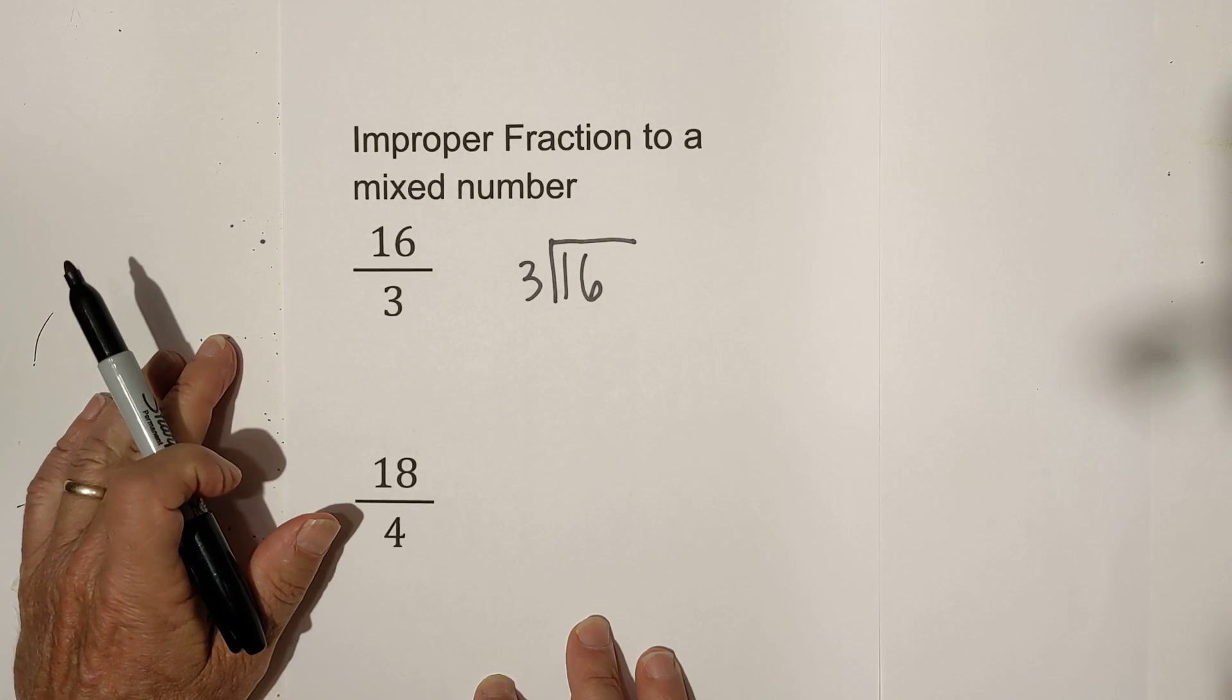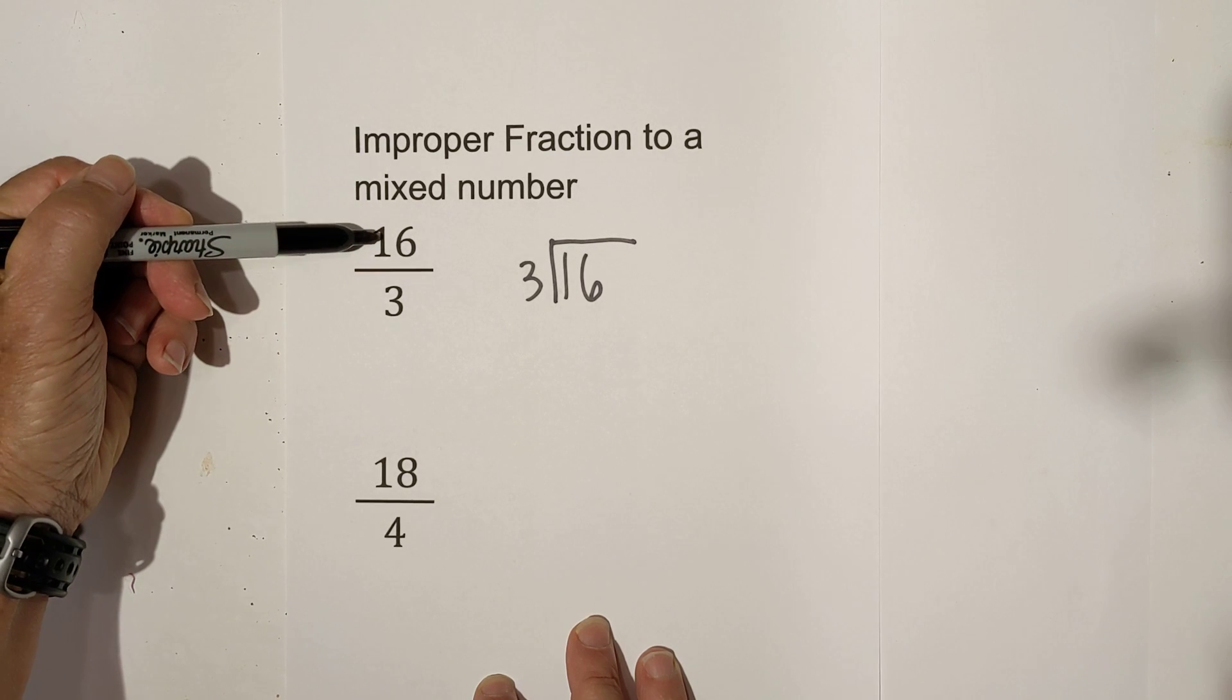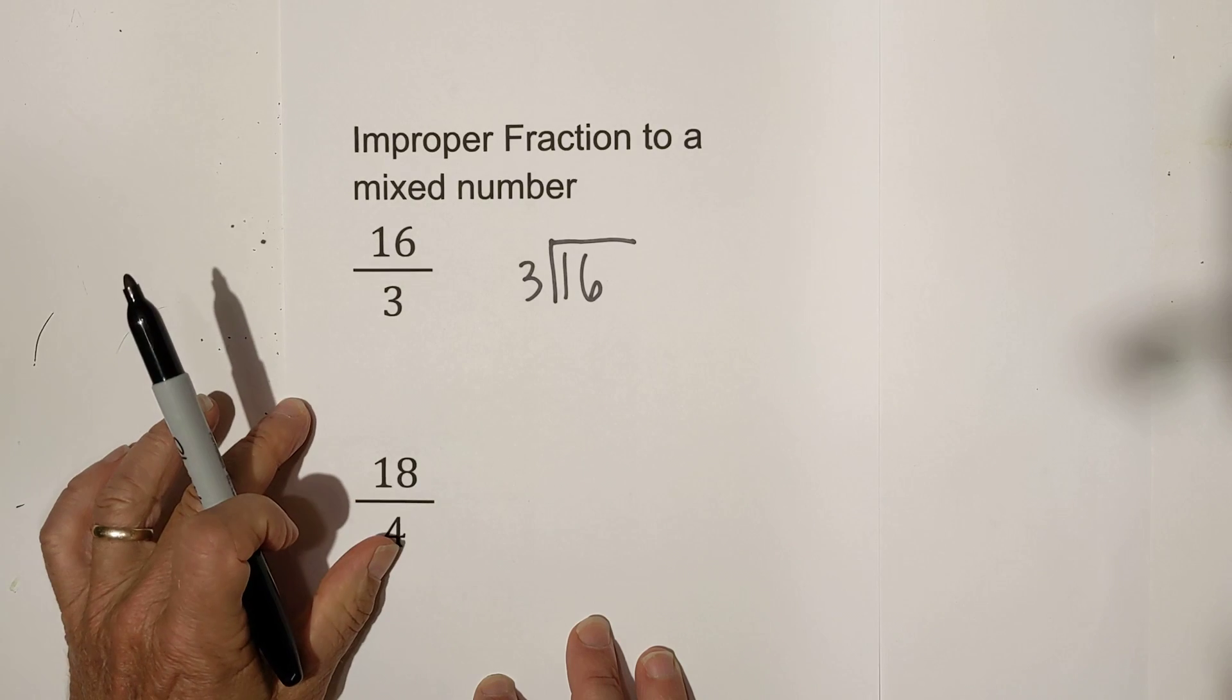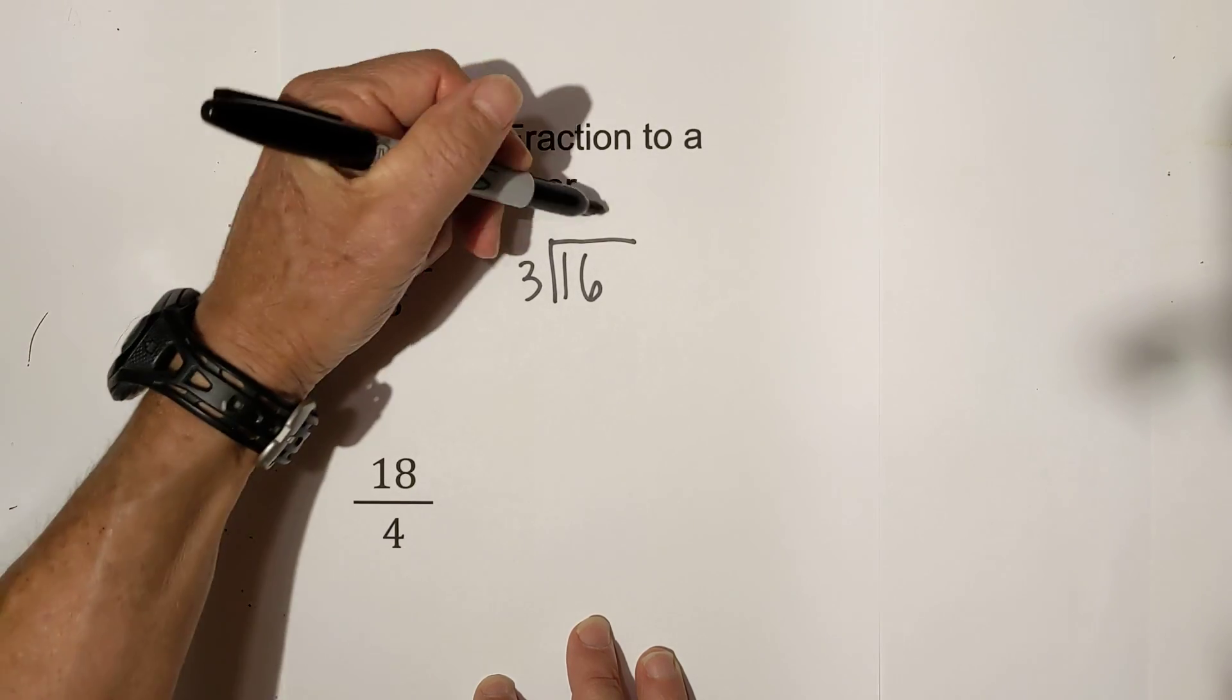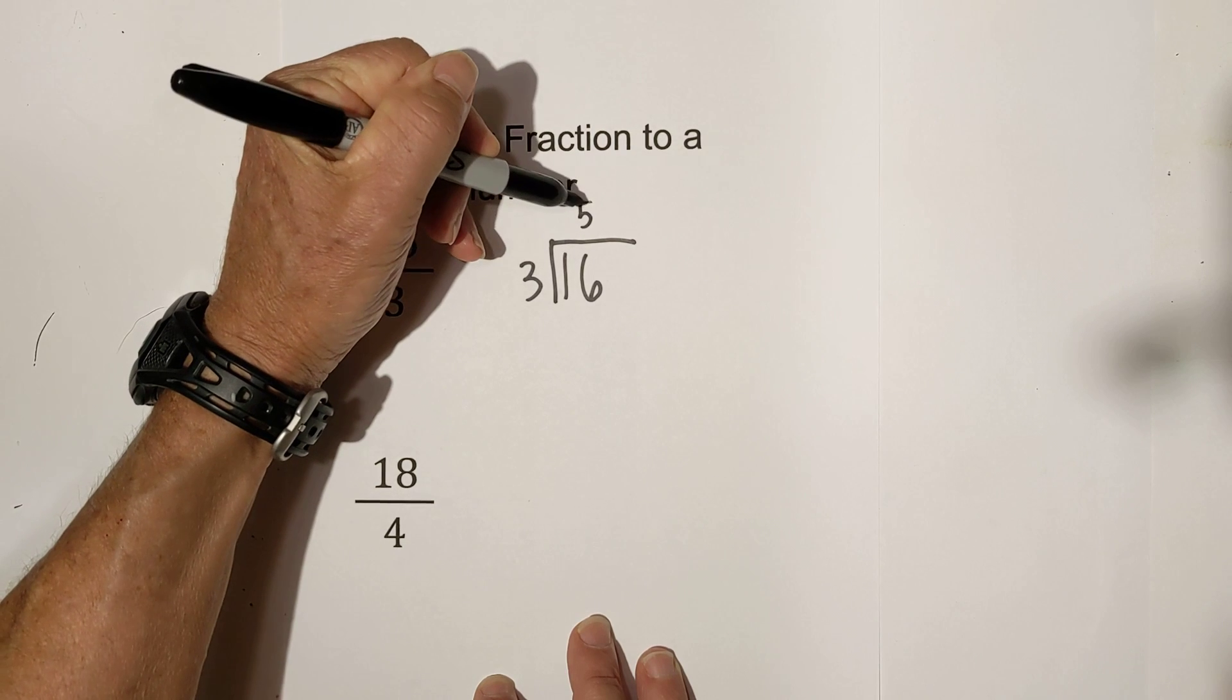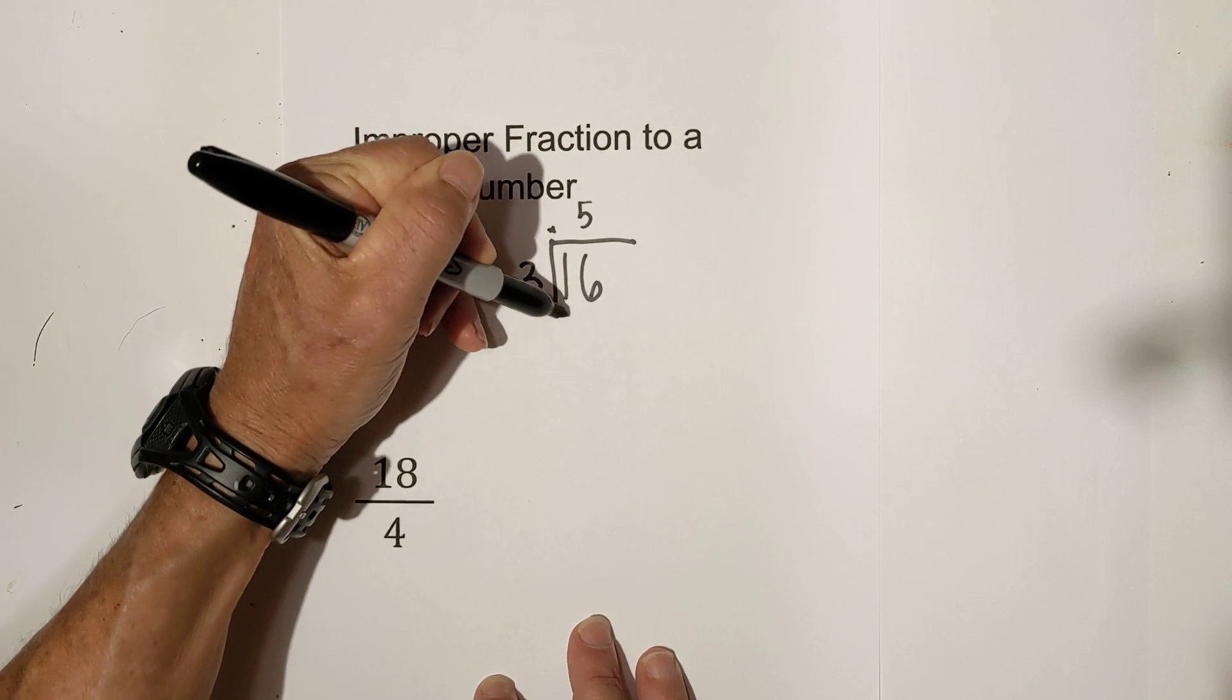You can easily convert it to a mixed number just by dividing the top number by the denominator. So I have got it set up here and so 3 goes into 16 five times, 5 times 3 is 15.